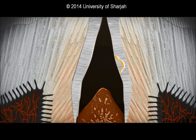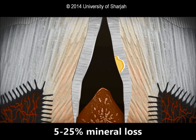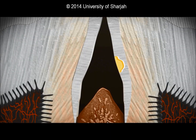The dark zone is superficial to the translucent zone, with approximately two to four percent mineral loss. As the lesion enlarges, more minerals are lost and the center of the dark zone becomes the body of the lesion. The body of the lesion extends from just beneath the surface zone to the dark zone, with approximately five to twenty-five percent mineral loss. There is increased prominence of the striae of Retzius in the body of the lesion. The lesion is clinically recognizable first as a white spot, and may become stained by exogenous pigments from food, tobacco, and bacteria, making it recognizable as a brown spot.